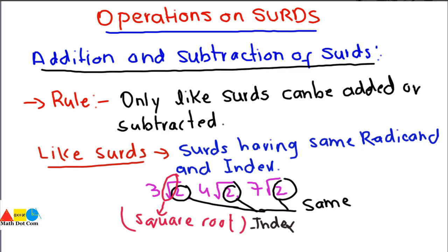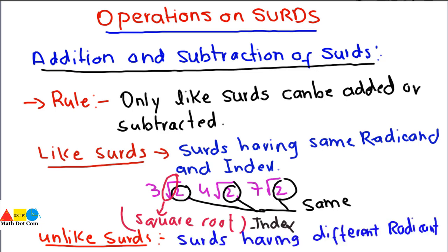Unlike surds are basically surds having different radicands. If the surds have different radicands, you cannot say they are like surds, and they cannot be added or subtracted together. Now let's see how you can add or subtract surds by keeping this condition in view.